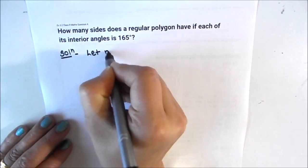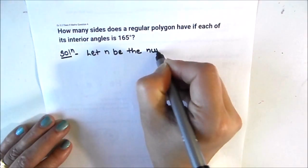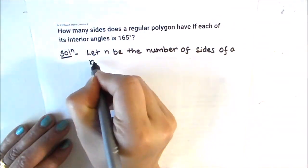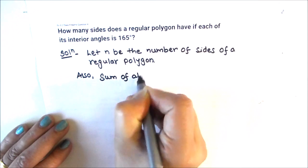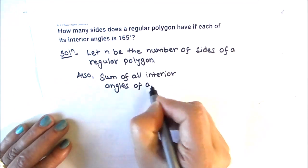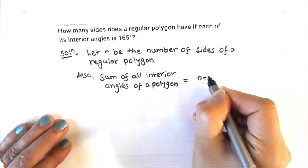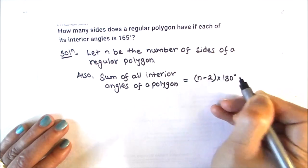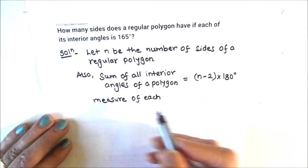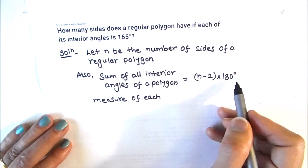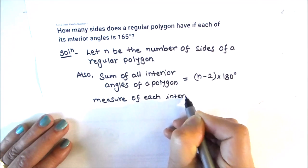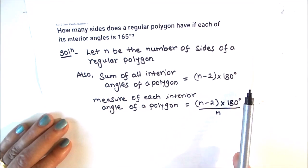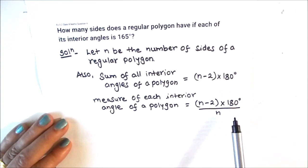Let n be the number of sides of the regular polygon. The formula to find the sum of all interior angles of a polygon is (n − 2) × 180°, where n is the number of sides. We also have a formula for the measure of each interior angle: divide the sum of all interior angles by the number of sides.